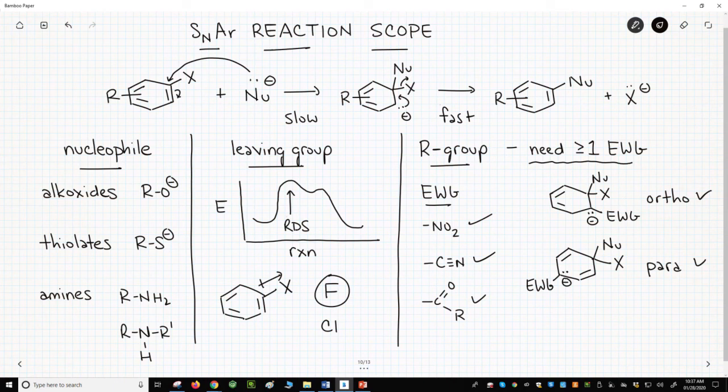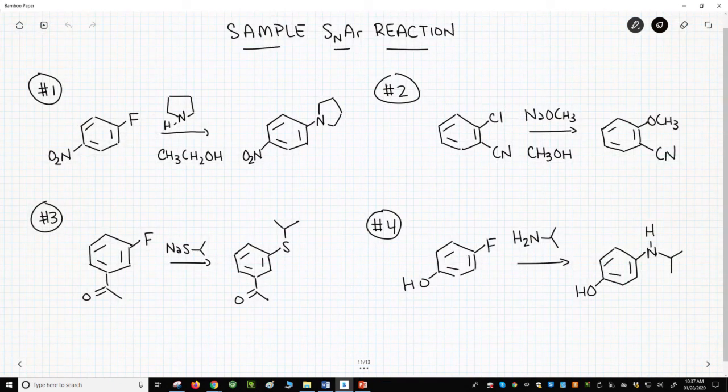Let's see four quick reaction examples. The first reaction is a really good reaction. The nucleophile is an amine. The leaving group is a fluoride, and the ring has an electron withdrawing group, a nitro. The nitro group is para to the halide.